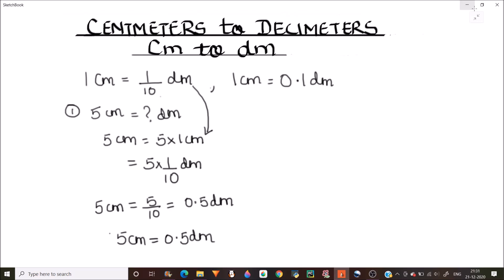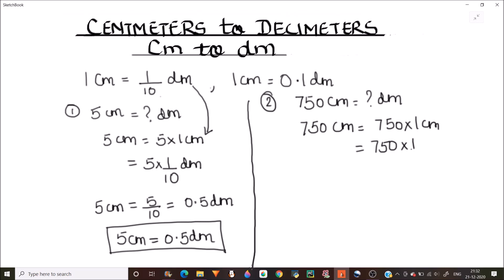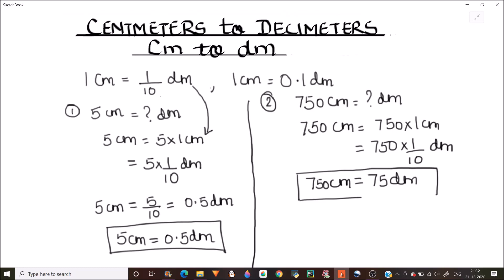Let's solve one more example: 750 centimeters is how many decimeters? 750 centimeters can be written as 750 times one centimeter, and in place of one centimeter we write one by ten decimeters. This comes out to be 75 decimeters. So 750 centimeters is equal to 75 decimeters.